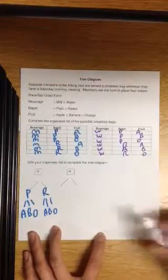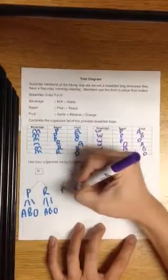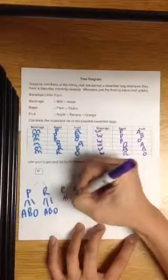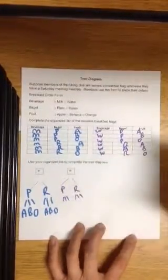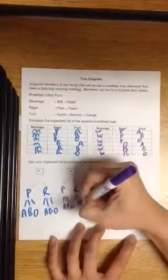What if I don't like milk? I would like water. What kind of bagel am I going to get? Plain or raisin? What type of fruits can I get for a plain bagel? Apple, banana, orange. What about raisin? Apple, banana, orange.